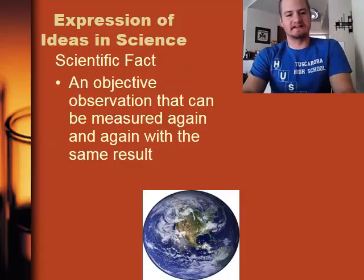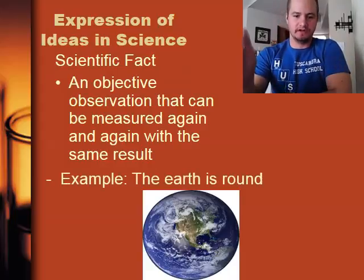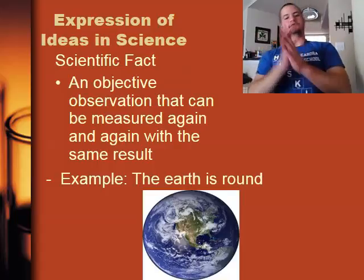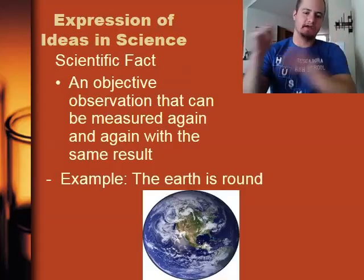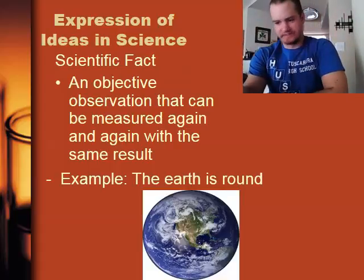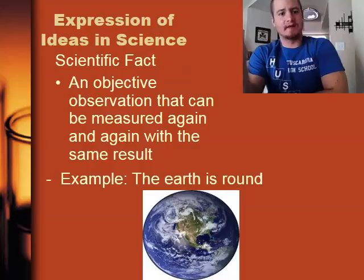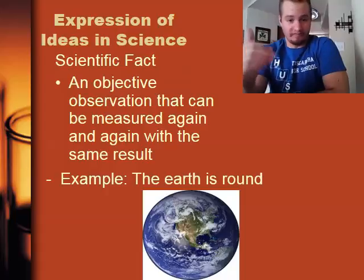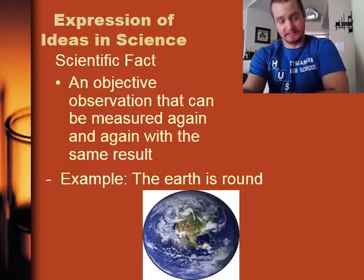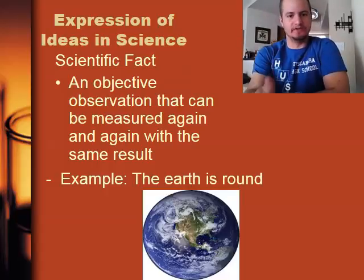A scientific fact is an objective observation that can be measured again and again with the same result. For example, the Earth is round. It doesn't matter how many times you try and go through this, the Earth is always going to be round. Let's take a little mathematical approach here. Let's think about pi. Pi is always going to be equal to 3.1415, etc., etc. It doesn't matter how many times you go through it, pi is always going to equal that number.